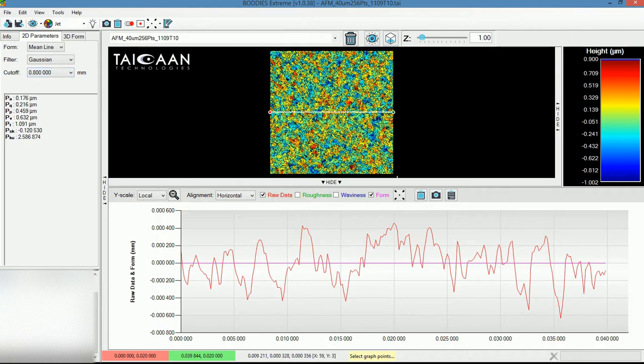If you recall, the data set that we're looking at is 40 microns square, it's AFM data. This cutoff is much larger than the scale of the data so it's not going to have any effect.